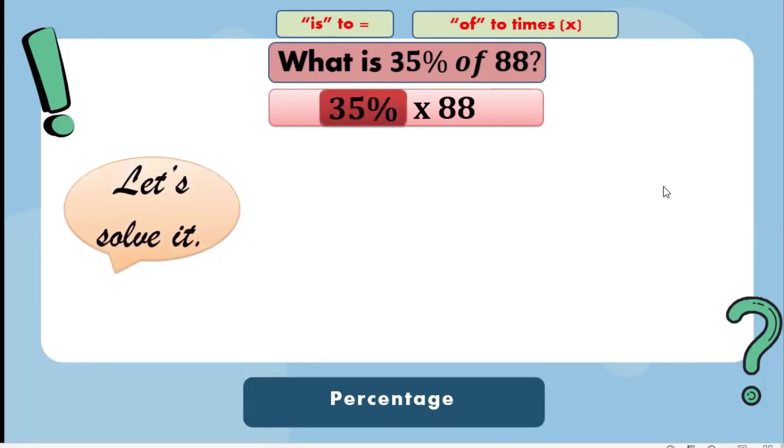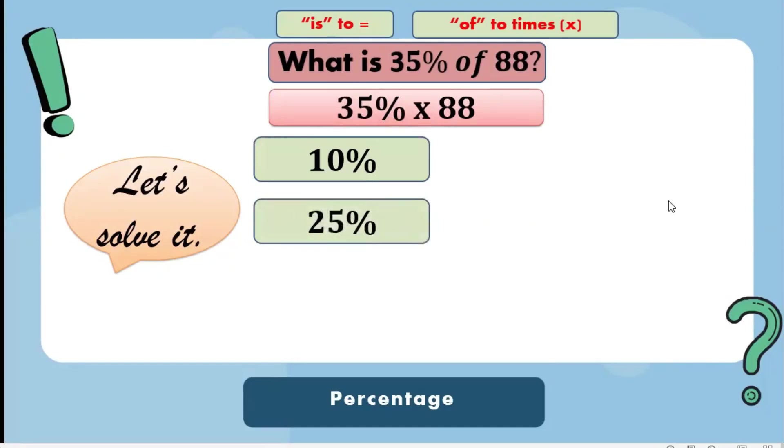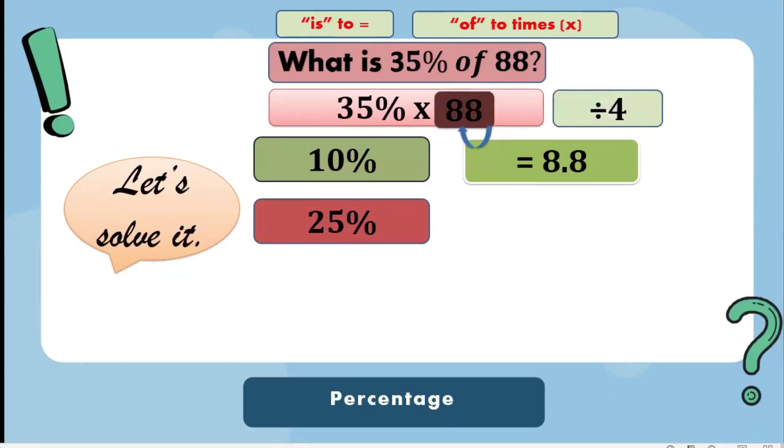First, we split 35% by 10% and 25%. To get 10% of 88, you will just divide it by 10 or just move the decimal point to the left. So the 10% of 88 is 8.8. We all know that 25% is a quarter of 100%, or 100% divided by 4 is equal to 25%. So let's divide 88 by 4. 88 divided by 4, the answer is 22.